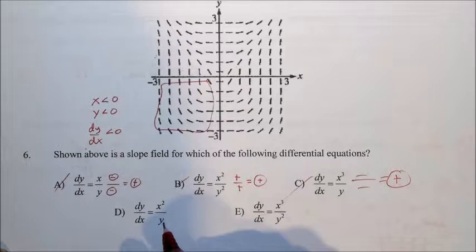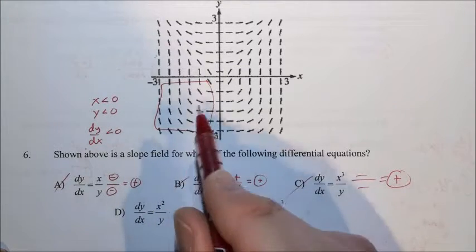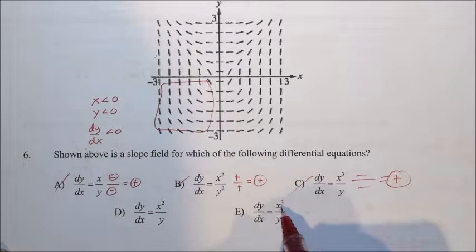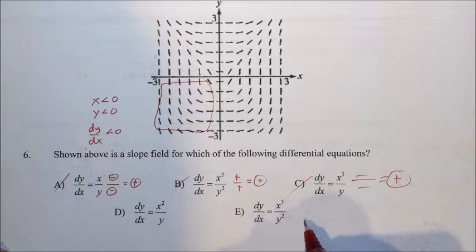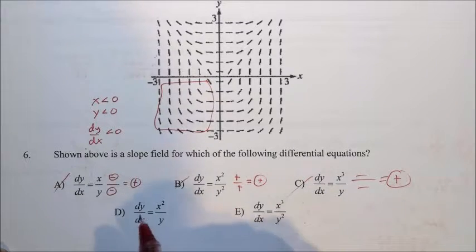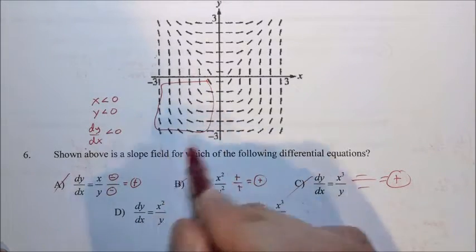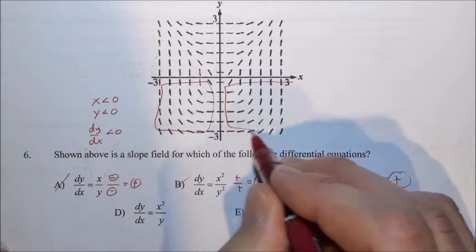So it's one of these two right here where if x is negative, we get positive because of the square. Y is negative. A positive divided by a negative gives us a negative. Same thing here. X is negative cubed stays negative. Y is negative squared goes positive. Negative divided by positive gives us negative. So it's either D or E.